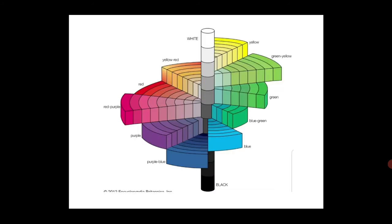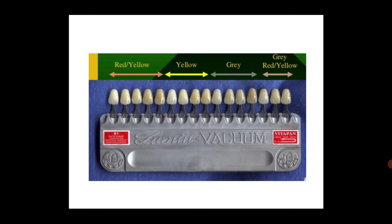Coming to the Munsell color coding system — it represents the same concepts just discussed. The wedges in the diagram represent the hues. Within each wedge, there are slices that represent the increase in intensity of that particular hue, which is the chroma. In the center, there is a longitudinal section that increases in darkness from top to bottom — that rod represents the value.